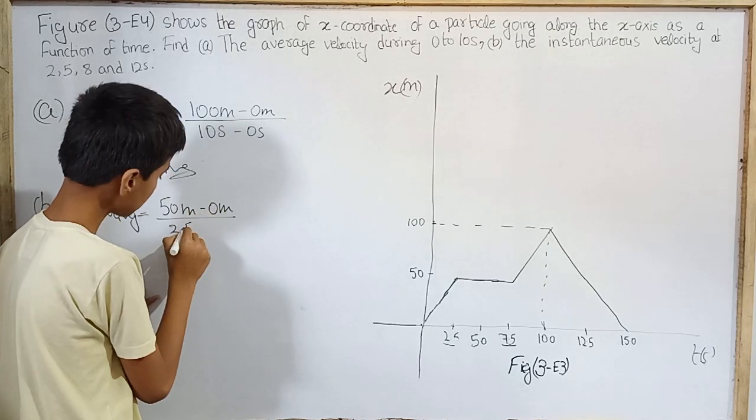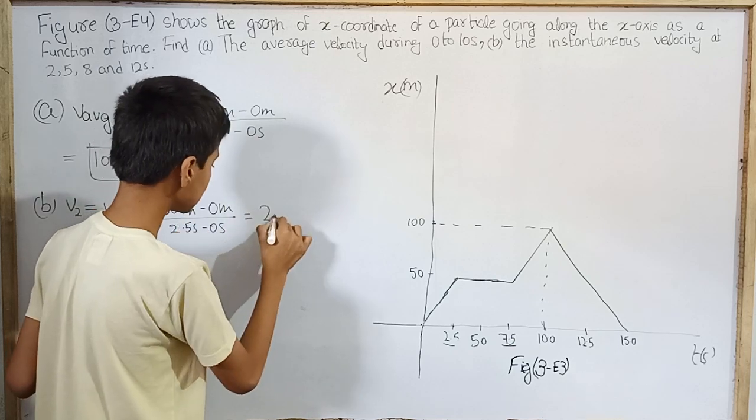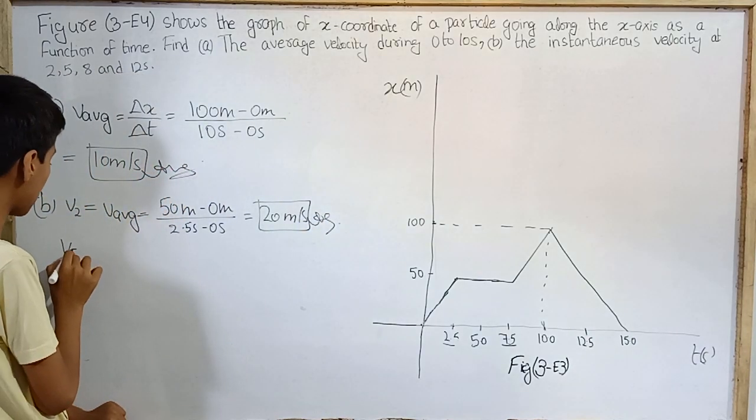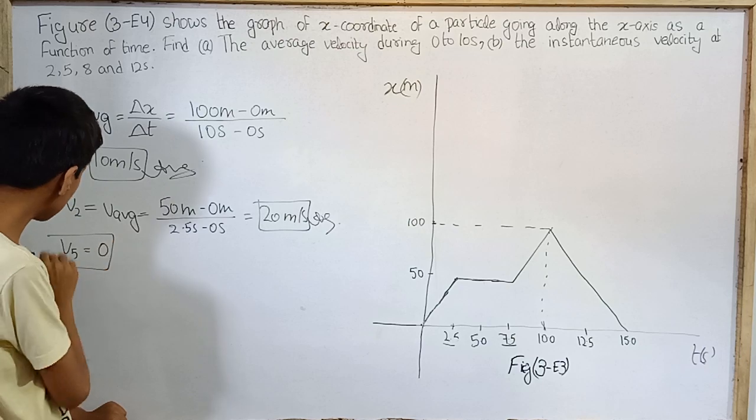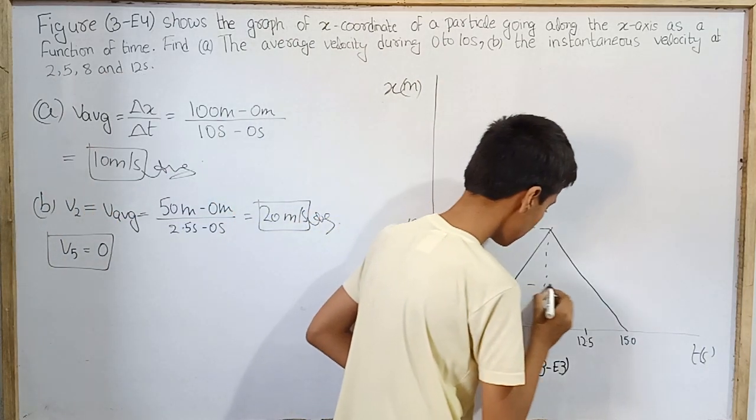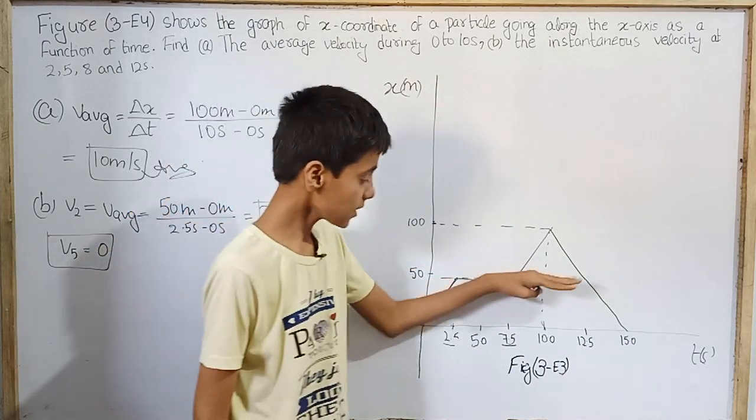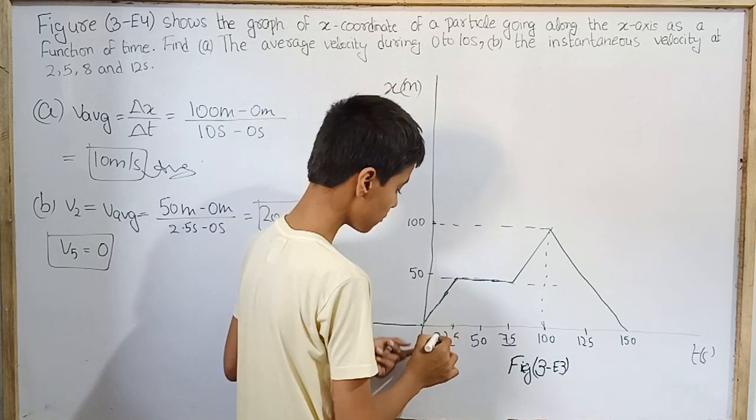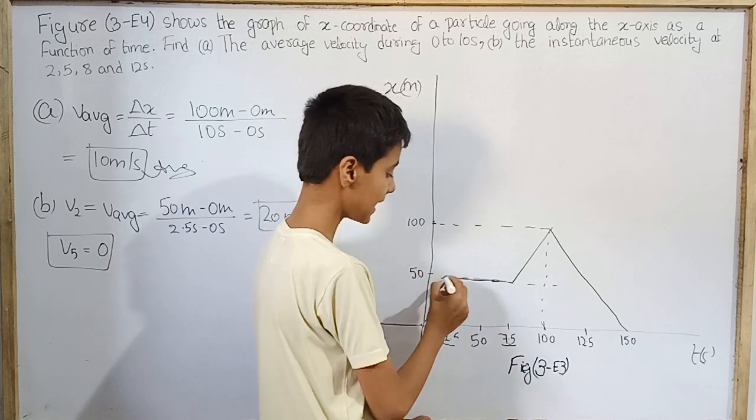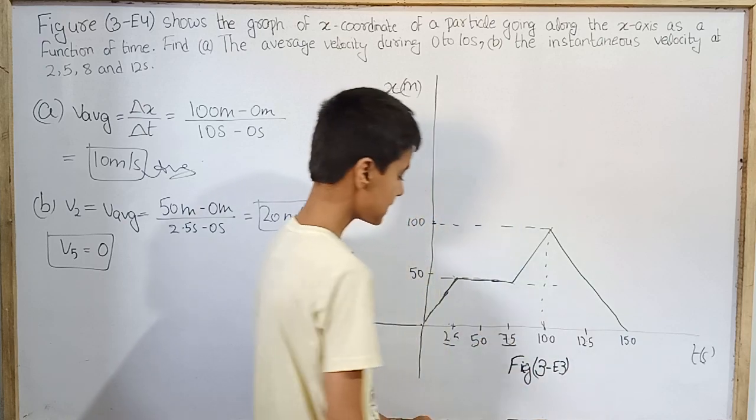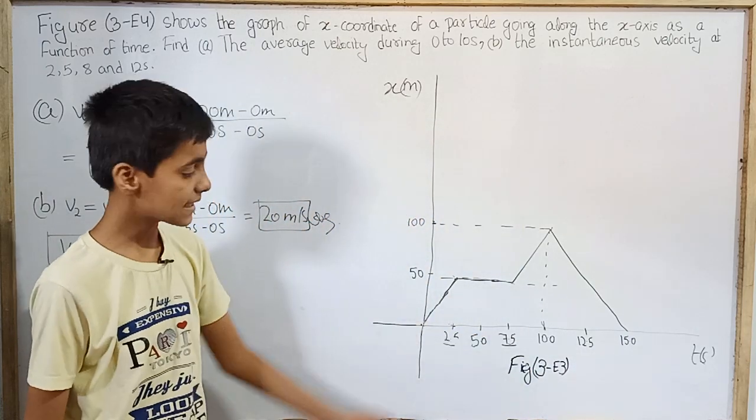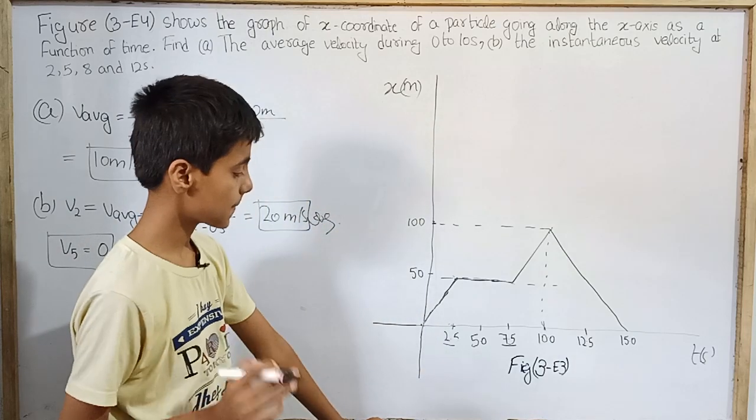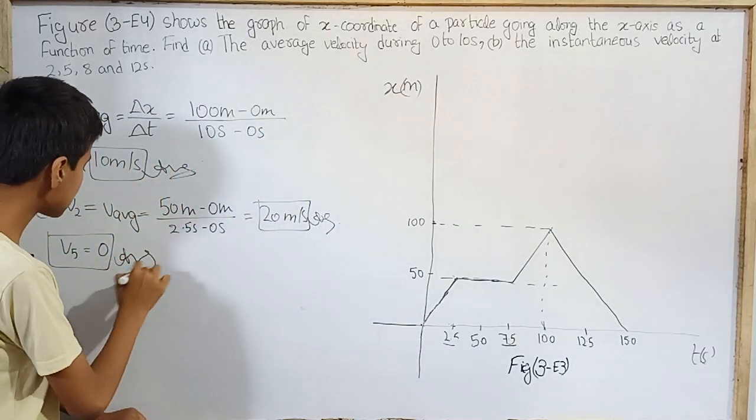So delta x over delta t equals 50 meters over 2.5 seconds minus 0 seconds. This is 50 meter over 2.5, which is 20 meters per second. At 5 seconds, every person knows that velocity is zero because the slope is horizontal. This line is horizontal, so the slope is zero. There is also one more method: we have said here slope is constant from 2.5 seconds to 7.5 seconds, so average velocity will be equal to the instantaneous velocity at 2.5, 7.5, and 5.0. That is also zero.